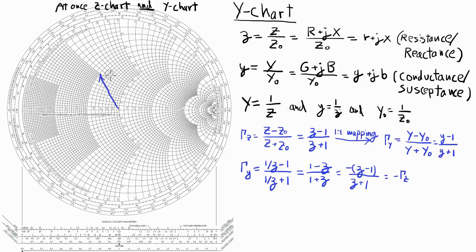So here we have a vector for gamma z. And we saw from the math that gamma y is equal to gamma z rotated by 180 degrees. We will use this fact a lot when moving between the z chart and the y chart.